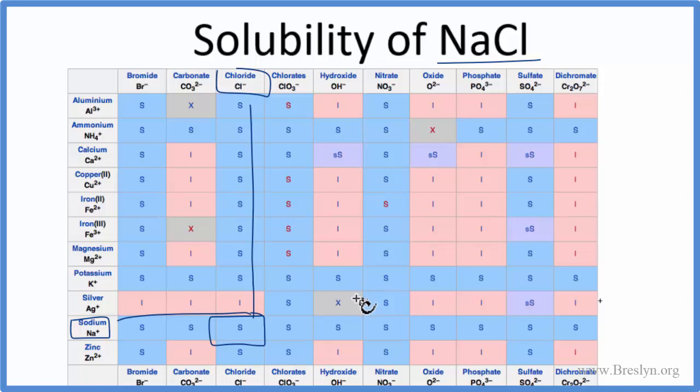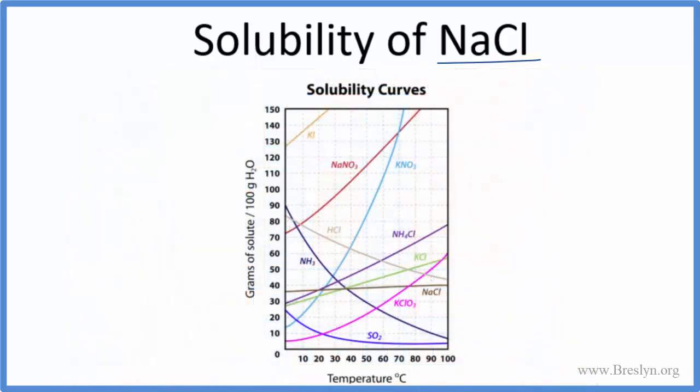If we looked at the solubility curve for NaCl, we'd see something interesting. We can see temperature here on the bottom. And this is the grams of solute. That's the NaCl in 100 grams of water, the solvent. We find NaCl right here.